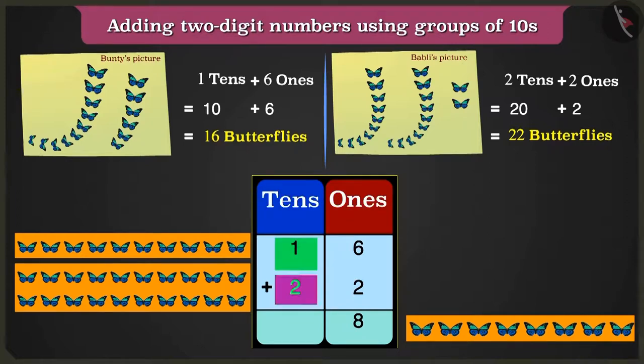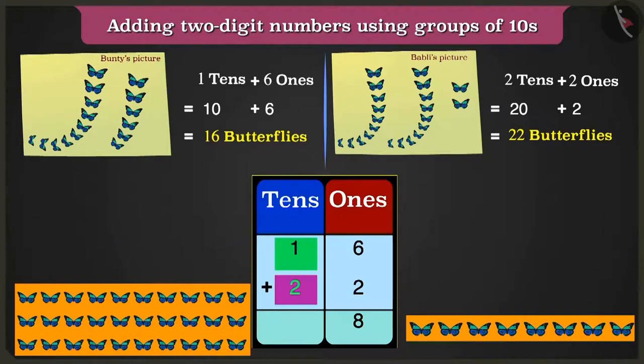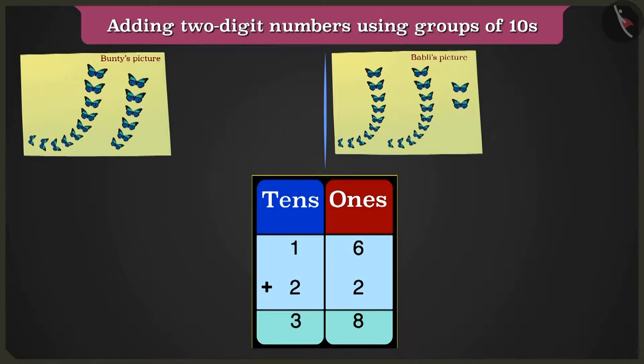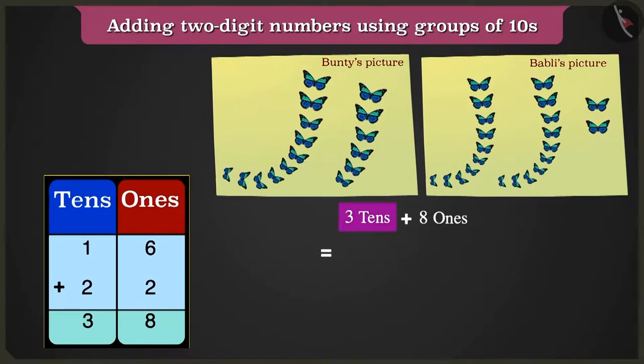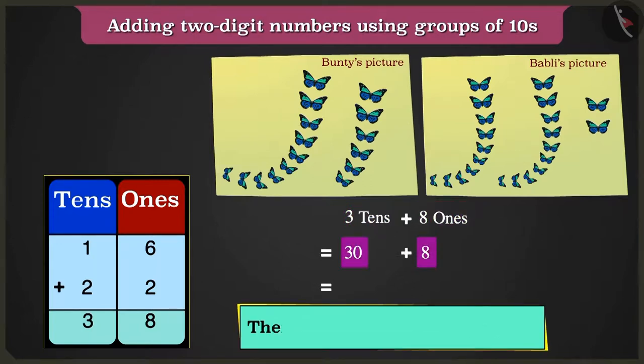Now in the box of tens, adding one and two will make three. We will write three in the box of tens. So we have three tens that are thirty and eight ones that are eight. Here there are a total of thirty-eight butterflies.